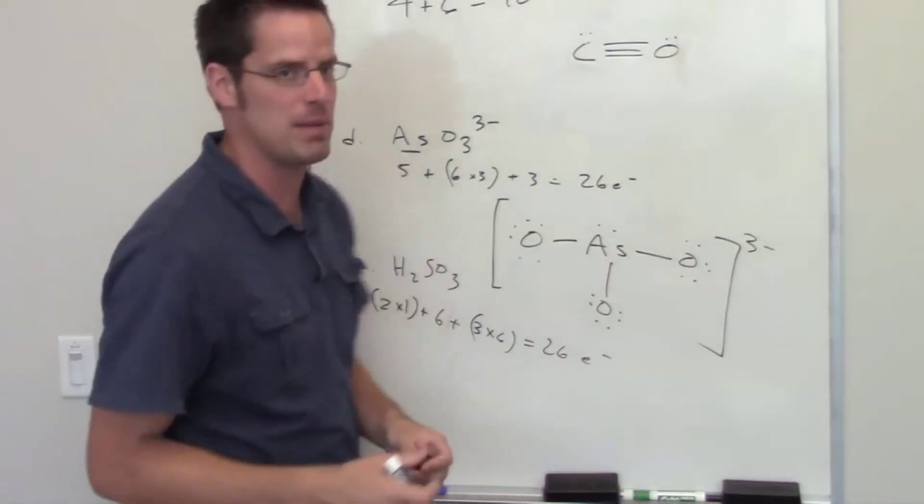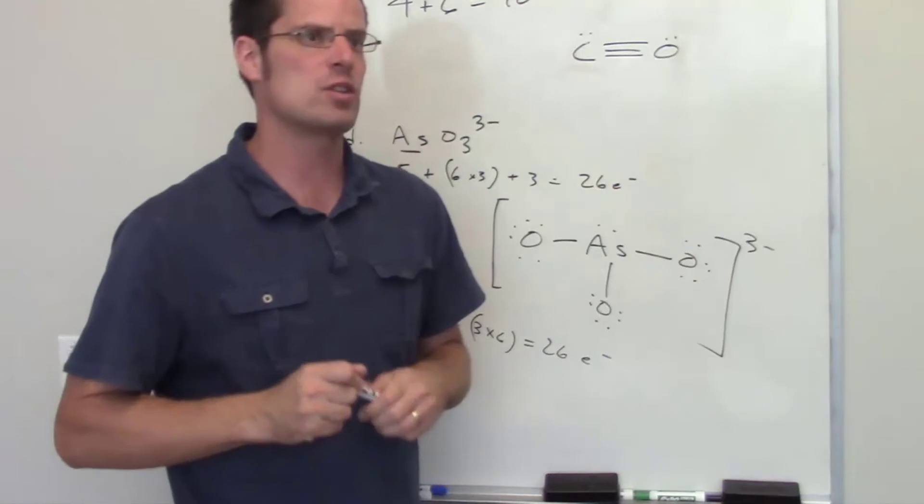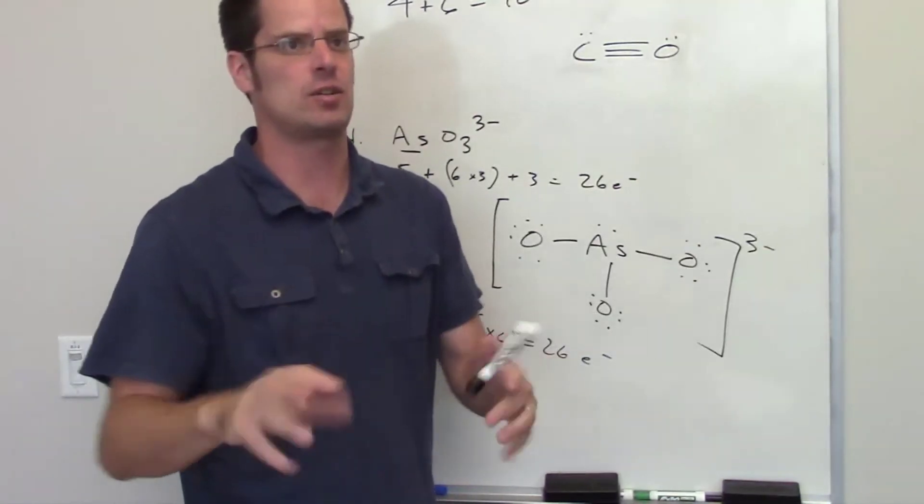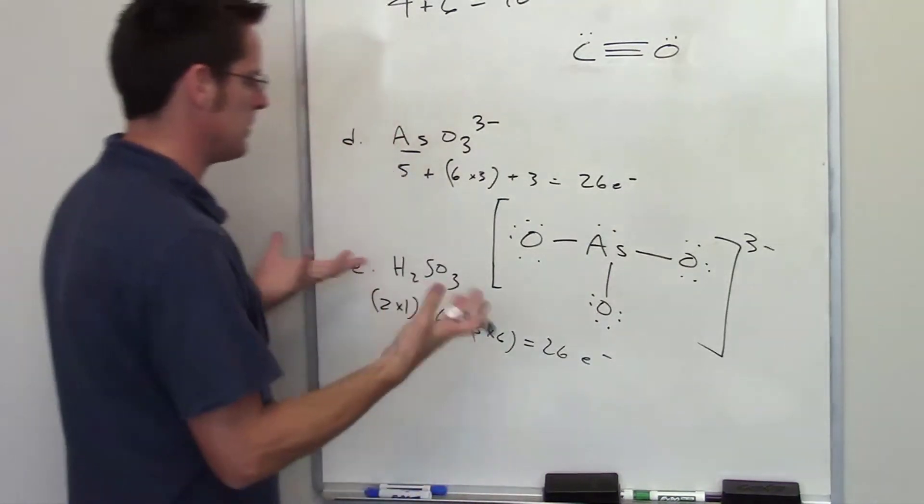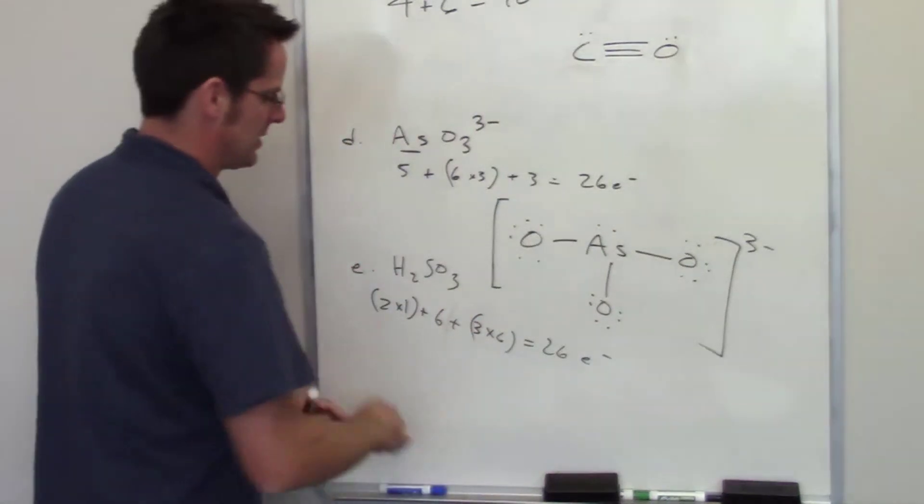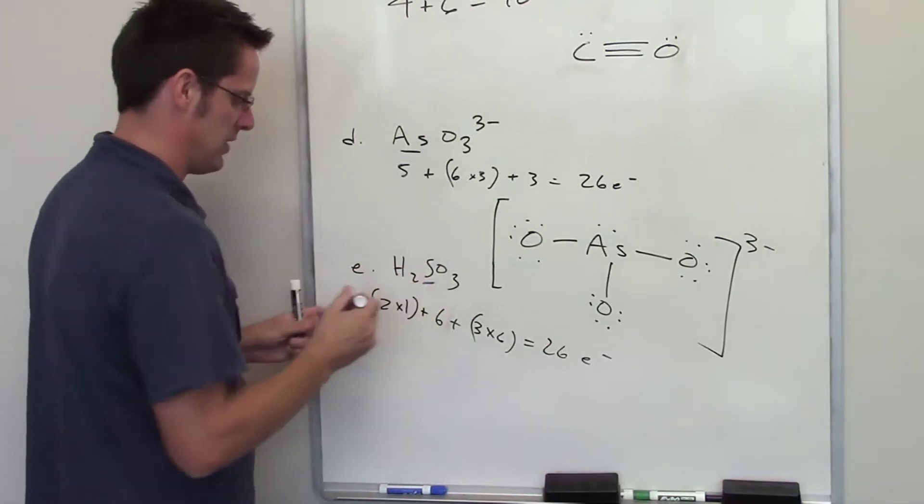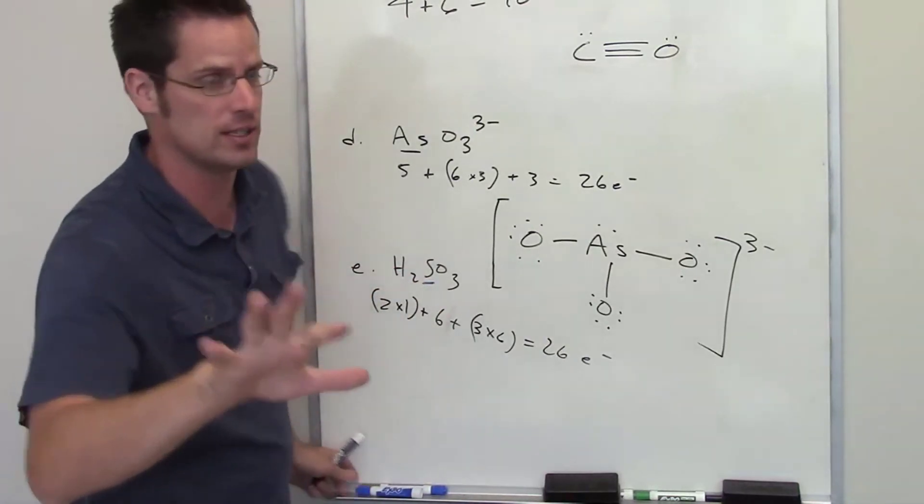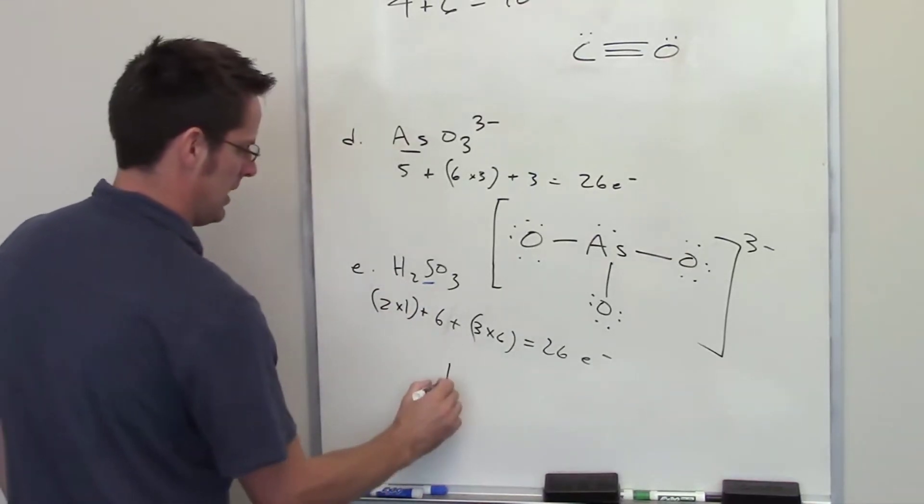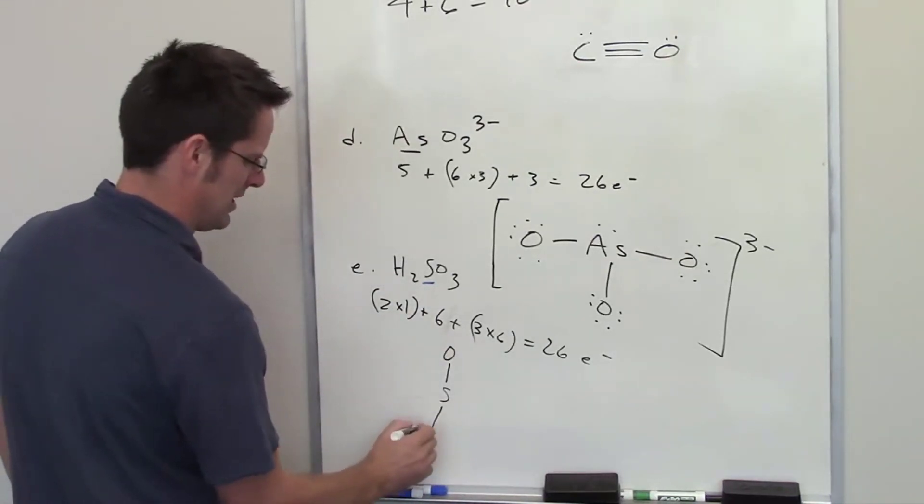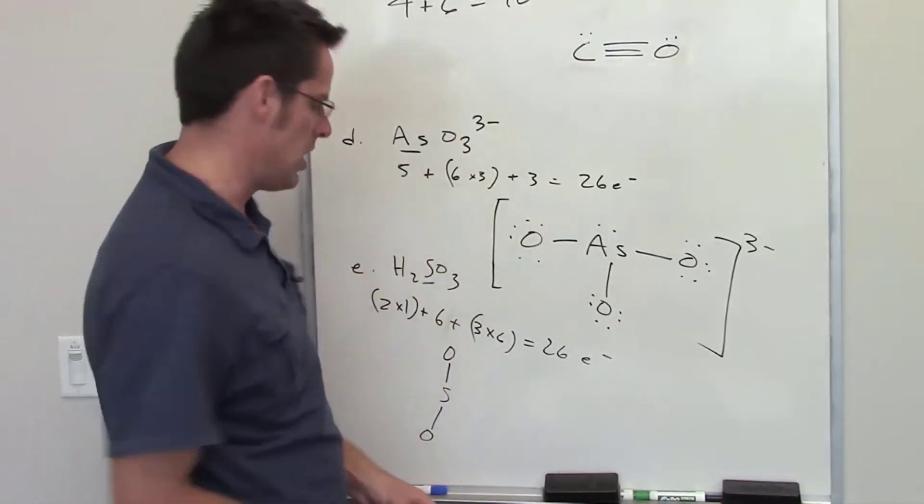Now I'm going to try and figure out a bonding pattern. Hydrogens are never going to be a central atom because hydrogens only want two electrons, not eight electrons, so you're not going to be able to have multiple bonds surrounding the hydrogen. So I always put them on the periphery. Generally speaking, aside from that, I put the least electronegative atom in this pileup, which is sulfur in this case, in the center.